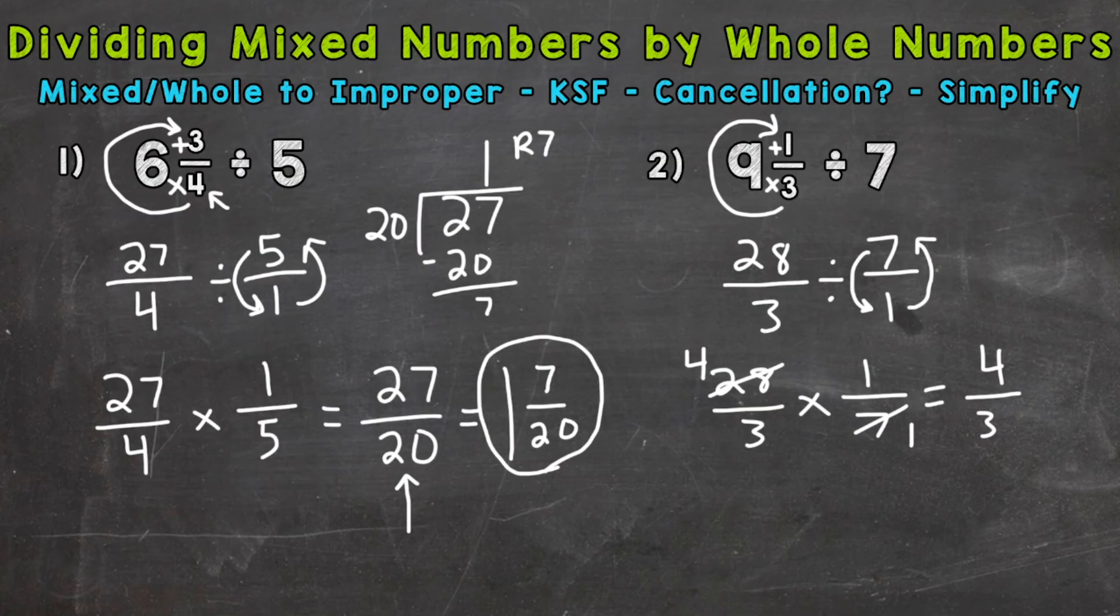But let's convert it to a mixed number. So 4 divided by 3. How many whole groups of 3 out of 4? Well, 1 with a remainder of 1. And keep our denominator of 3 the same. So 1 and 1 3rd. 1 3rd is in simplest form. So we cannot simplify any further. And that is our final answer.